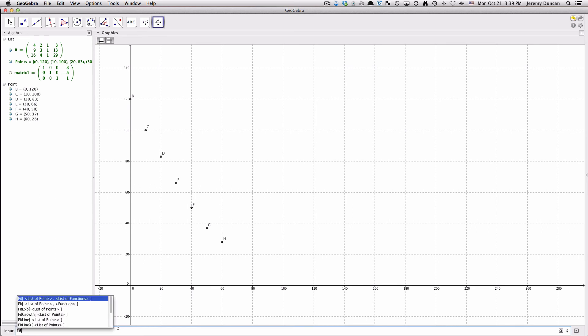If I type in fit poly, it lets me fit a polynomial, and I need a list of points and a degree of the polynomial. I already have a list of points up here that I called points, so I'm just going to tell it points. Then I'm going to hit tab, and it says degree of polynomial. The degree of my polynomial, degree means the highest exponent, so for a quadratic function the degree is 2, and then I hit enter.